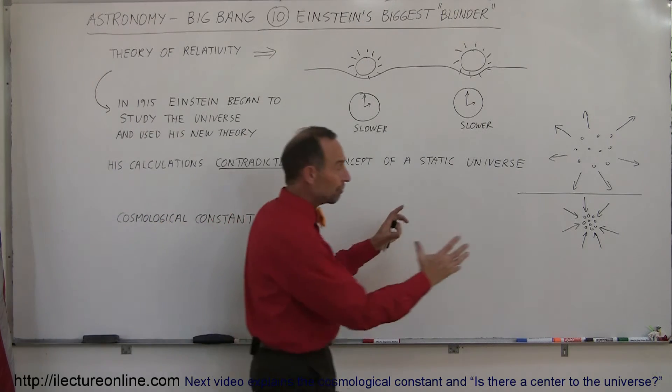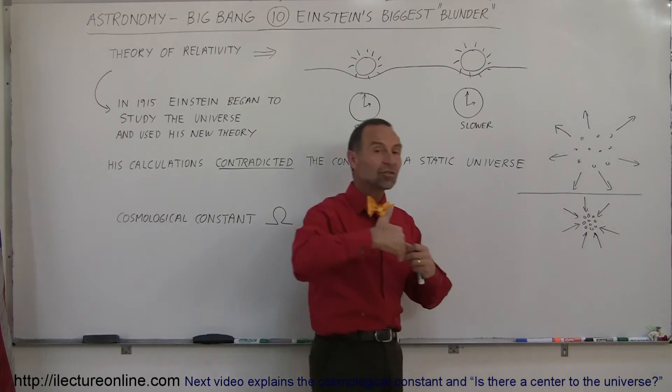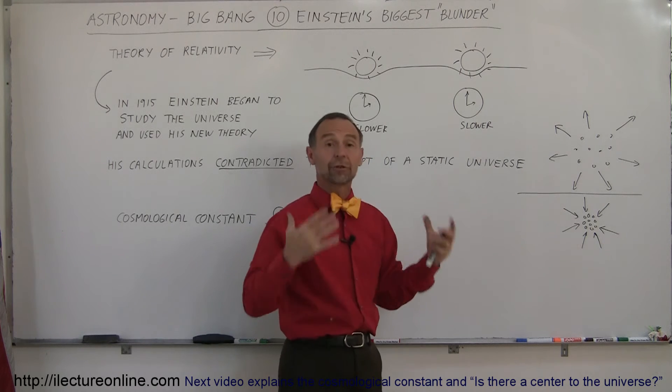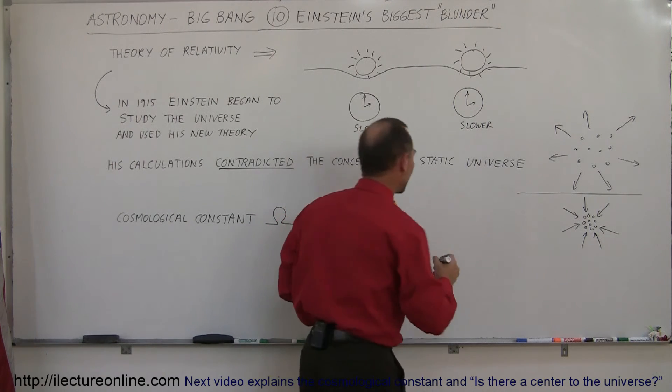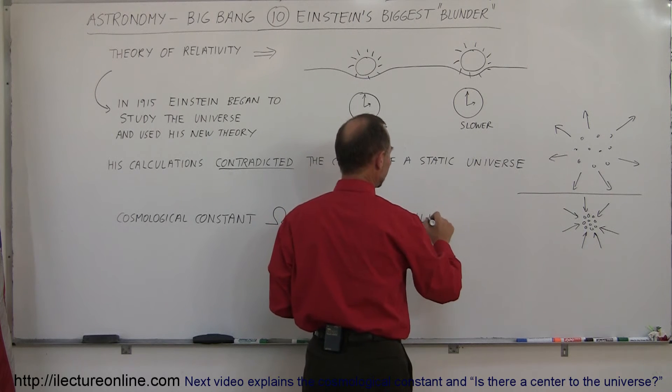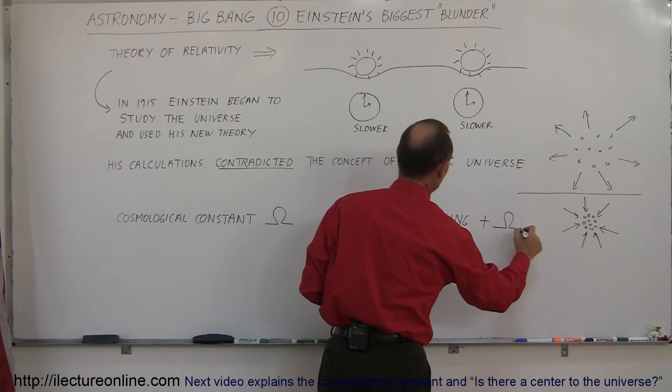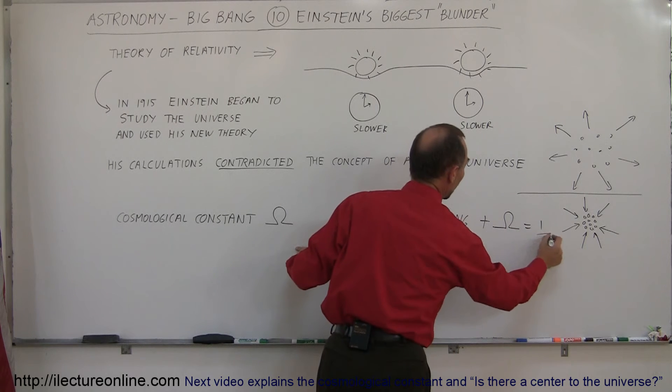He said to prevent the universe from collapsing, maybe there is something there that holds it back from collapsing because I really believe that the universe is static. And so what he said was, okay, we have a collapsing universe, but I add this, my constant to it, and then it becomes one.